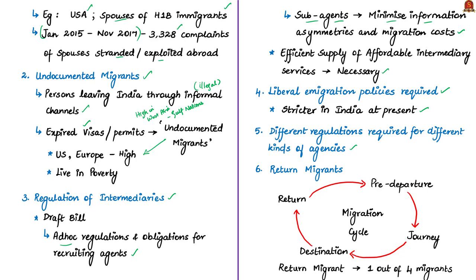The authors discuss return migrants. The complete migration cycle of an individual includes pre-departure formalities, then their journey, then their destination country where they work or study, and finally their return to India. The authors tell that the draft bill addresses only the first three parts of the cycle — pre-departure, journey, and destination — but has completely ignored return migration.